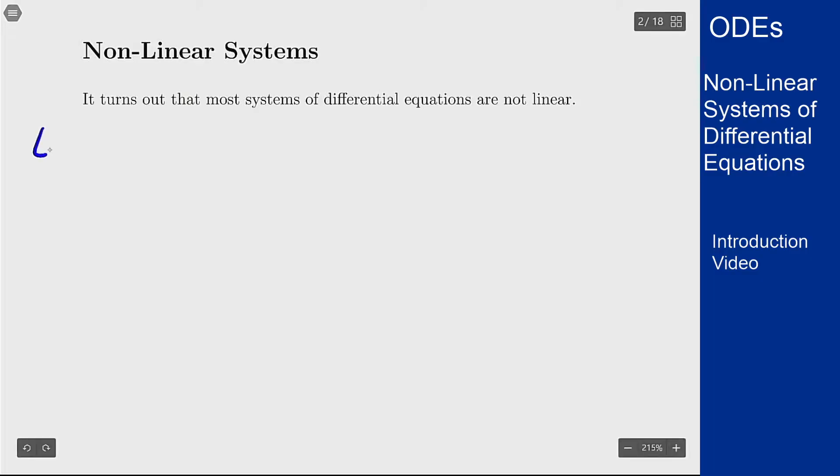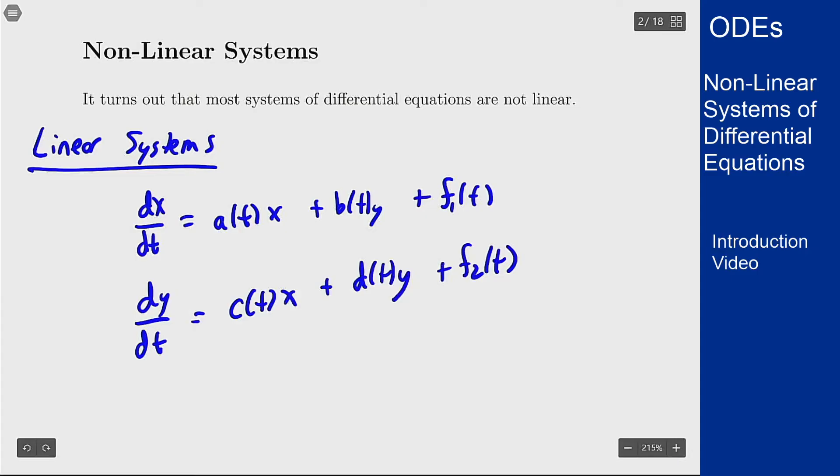The linear systems, say you have two components, must look like this and that's it. You can only have these terms where it's a function of t times x, function of t times y, and a function of t on the end, and same for the other derivative.